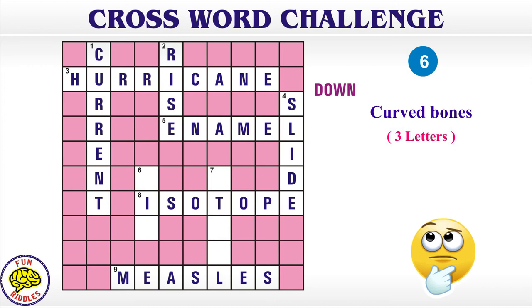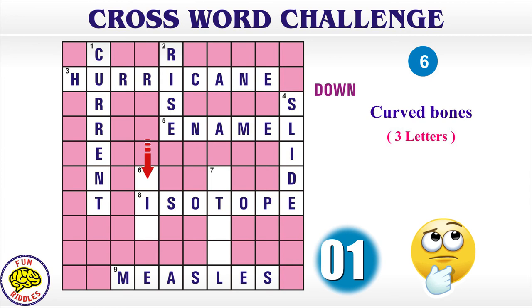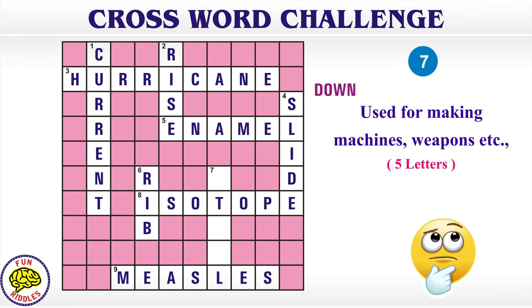6 Down: curved bones, 3 letters. Answer: Rib.